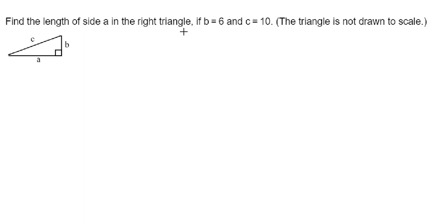So here's our first example. Find the length of side A in the right triangle if B is equal to 6 and C is equal to 10. The triangle is not drawn to scale, so we're not going to base our answer off the way the picture looks — we're going to base our answer off what the math tells us. The relationship between these three sides is the Pythagorean theorem.